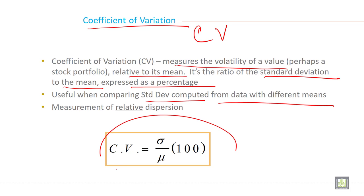And the formula to calculate coefficient of variation is this: standard deviation divided by mean of a population times 100.